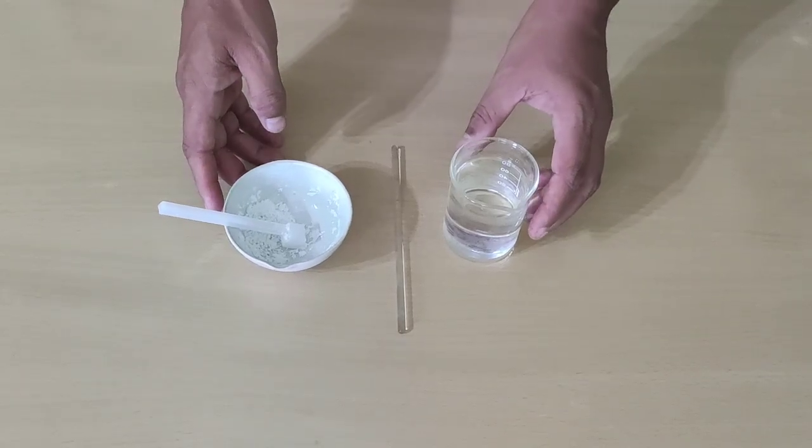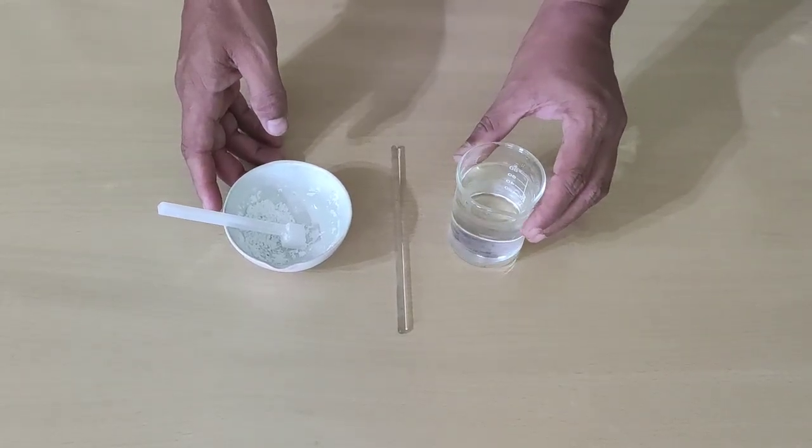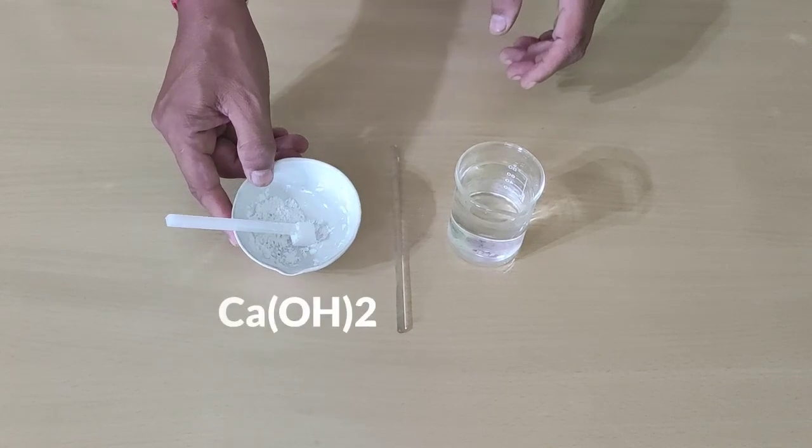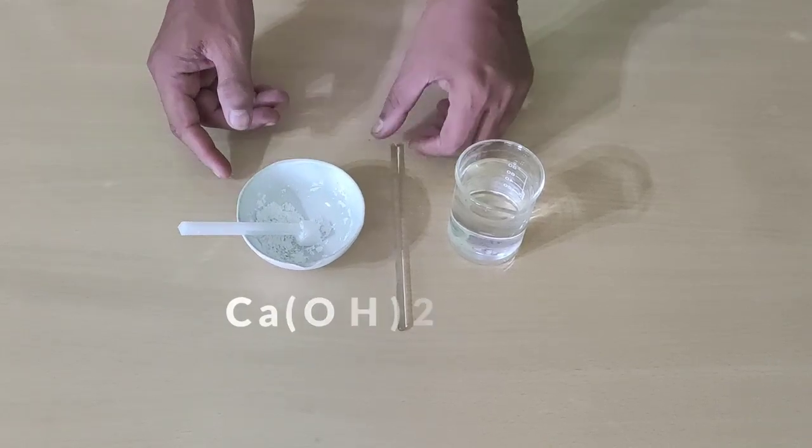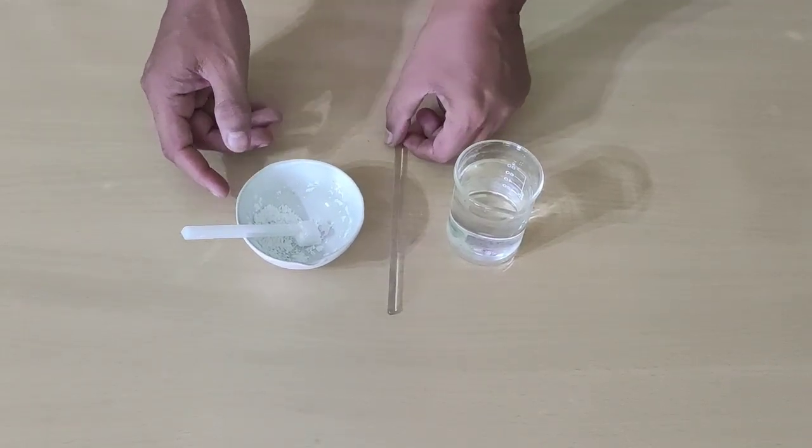Today we will prepare lime water. For preparing lime water, I have taken tap water in this beaker and calcium hydroxide powder in this china clay bowl and a glass rod for stirring the solution.